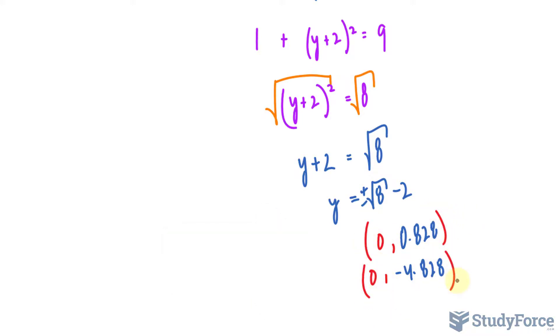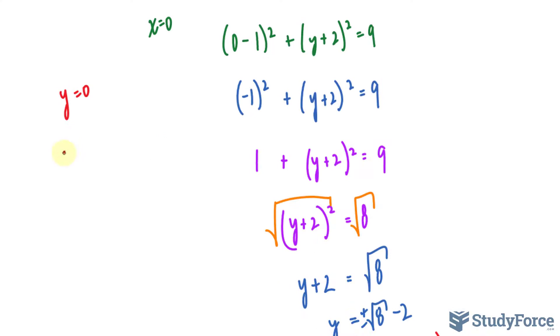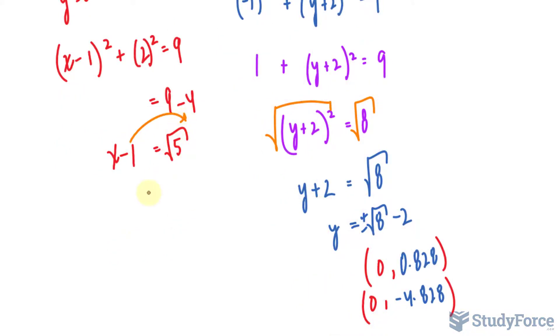And we repeat the process for when y equals 0 and we solve for x. Let's go ahead and quickly do that. (x minus 1) squared plus this time 2 to the power of 2, equals 9. 9 minus 4 and that's equal to 5. We're taking the square root of that. I'm doing this really quickly because you just saw how it was done. We'll take that over.